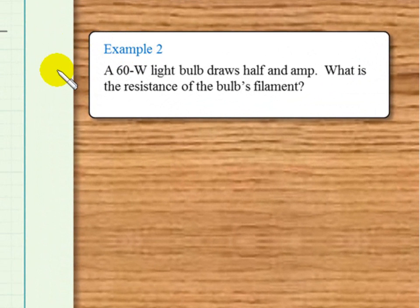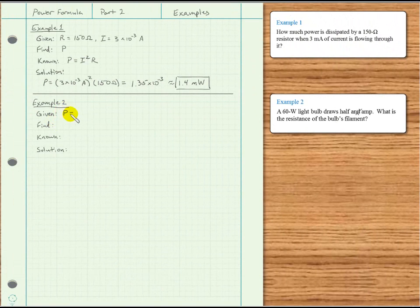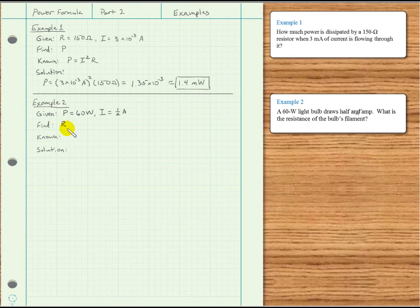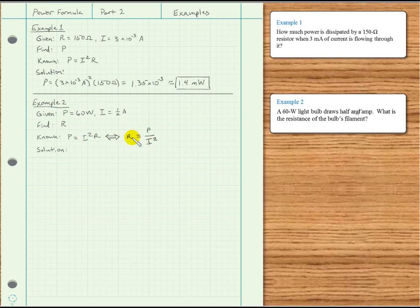Example 2. A 60 watt light bulb draws half an amp. What is the resistance of the bulb's filament? Given: we have power as 60 watts, and the current is given as one half of an amp. We are asked to find R, the resistance of the filament of the light bulb. What relationship do we know between power, current, and resistance? We have power is I squared R.